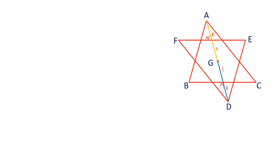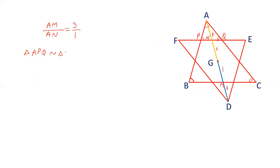Now, the length of AM is 3 and the length of AN is 1, so the ratio of AM to AN is 3:1. Now let's check the relation between triangle APQ and triangle ABC. As this triangle is rotated 180 degrees, EF is parallel to BC, and therefore angle APQ equals angle ACB. And angle A is common. So we can say that triangle APQ is similar to triangle ABC.